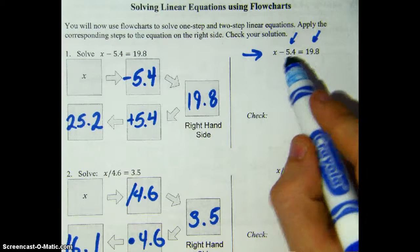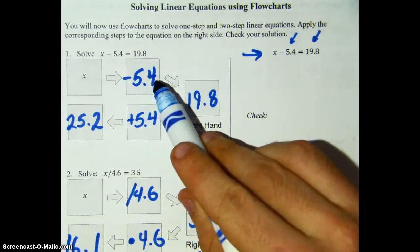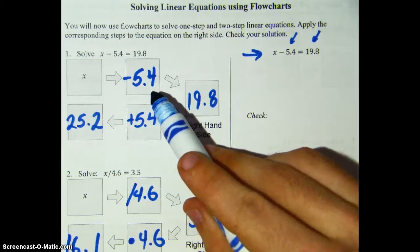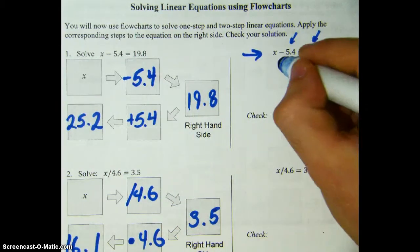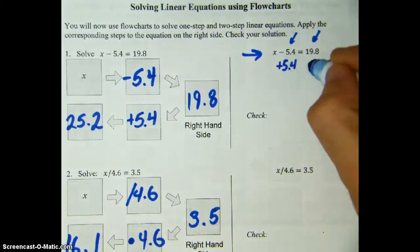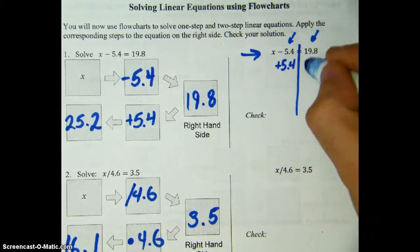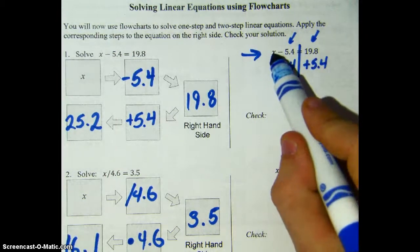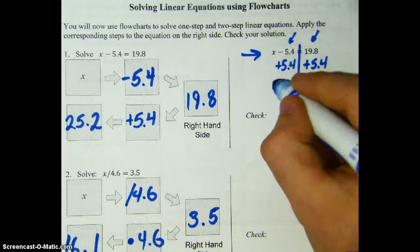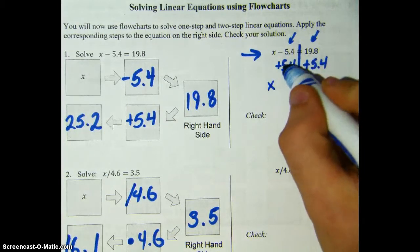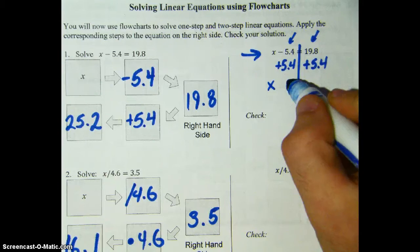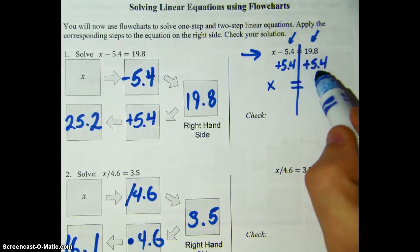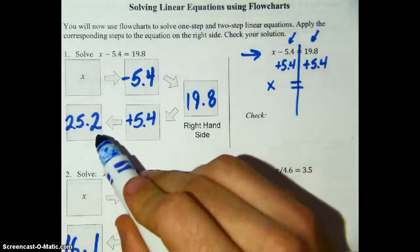So think about this. What did I do in my flowchart to undo, to get rid of, to cancel out that subtract 5.4? I added 5.4. So I'm going to write plus 5.4 to both sides of my equation. It might be nice to draw a line here — plus 5.4. And what happens to my equation? Well, the x stays — nothing happens to that x, so I'll bring that down. Negative 5.4 plus 5.4 equals zero, so I don't need to write that anymore. And then 19.8 plus 5.4 — we've already done that — that's 25.2.